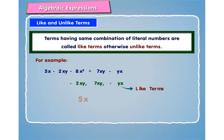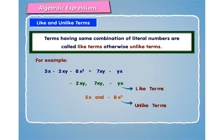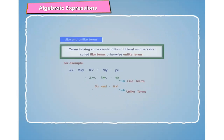Whereas 5x and minus 8x squared are unlike terms. 5x and minus 2xy are also unlike terms.